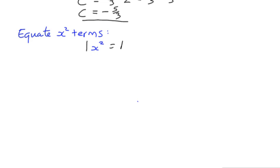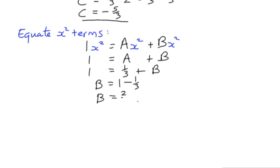So on the left-hand side, we had 1x squared. On the right-hand side, we've got Ax squared. And then later on, we're going to have Bx squared. So we can really just simplify that to 1 equals A plus B, because it's only the coefficients that we really need. If 1 is equal to A plus B, we know already that A is 1 third, which means that B is going to take the value of 1 minus 1 third, which is 2 thirds.